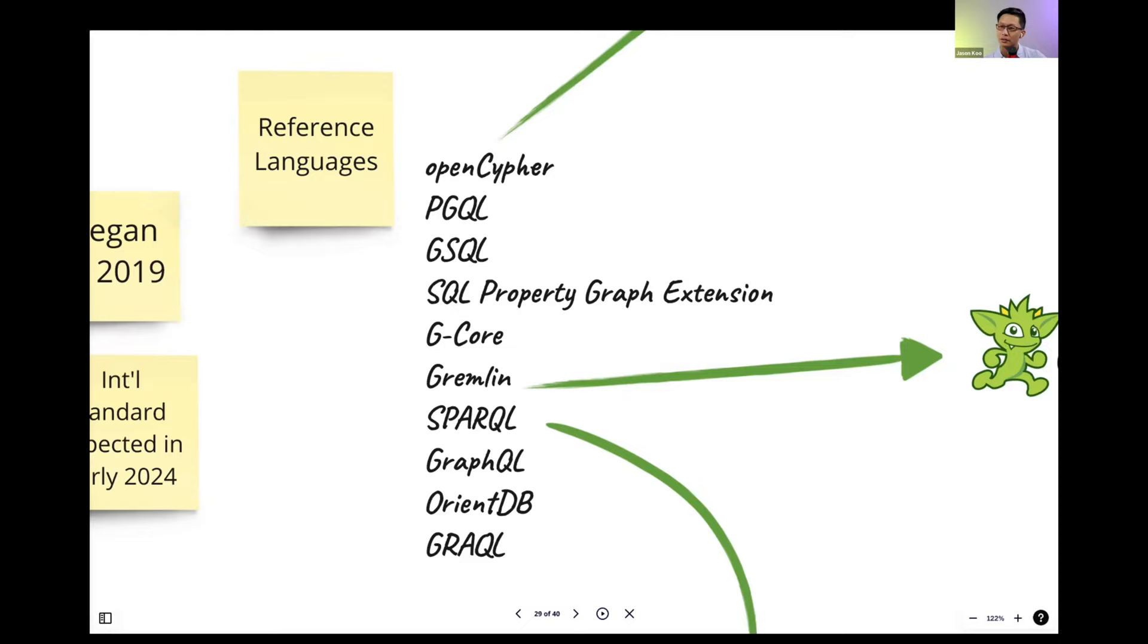There are some questions down in the chat. Want me to read them out to you? Yes, please. So one is, can I do a depth first search or breadth first search on a graph database? Yes, you can do both. I should prepare an example for that, but yeah, you can do both. So another question is, do graph databases have concepts like indices for optimization? Yes. Yeah, you can add constraints and indexes to speed up the queries, but they're not required.